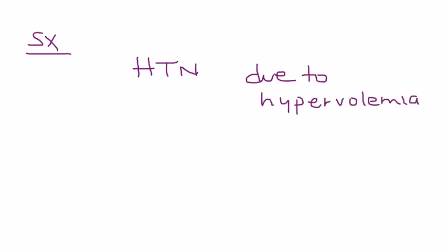So, what are the symptoms involved in primary aldosteronism? Well, without a doubt, high blood pressure will be a presenting factor due to the fact that you have all this water coming back. Hypervolemia.